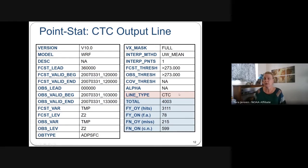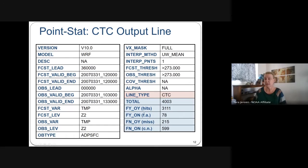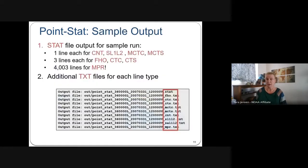After the line type, all the header information is done and what follows is the specific information for that line type. The number of columns after the line type varies depending on which line type it is. To know what output to expect, you can look in the MET User's Guide, or print out the .txt files to get header information for each line type.